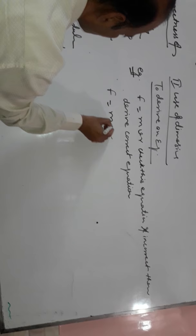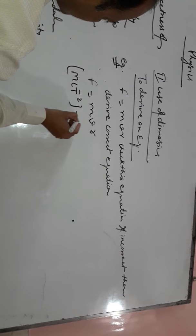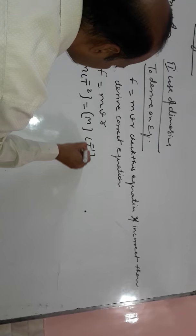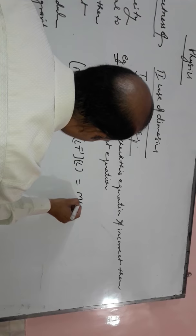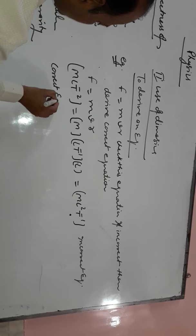F equal to MVR. Dimension of force is MLT⁻², dimension of mass is M, velocity is LT⁻¹, and radius is L. That is ML²T⁻¹. This is an incorrect equation. Now we derive the correct equation.